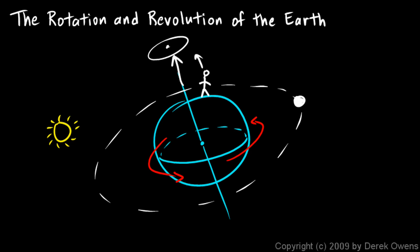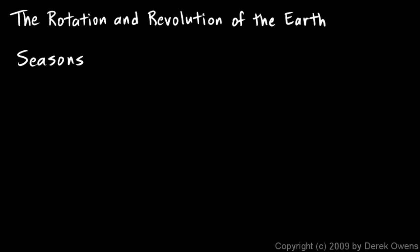All of the star trails in the sky would form circles. Another effect of the rotation of the earth and the revolution of the earth, along with the tilt of the earth's axis, is the seasons.